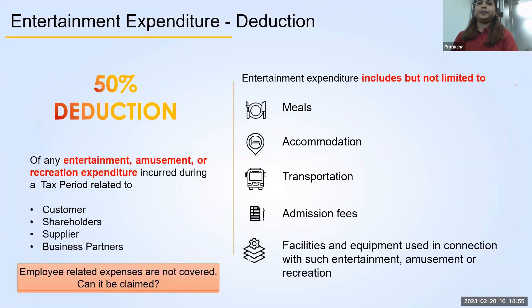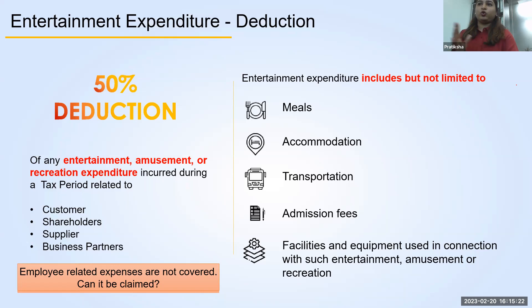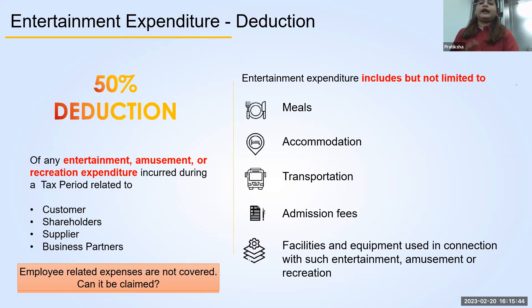There is a special provision relating to entertainment expenses. Entertainment expenses include meals, accommodation, transportation, admission fees, and similar items. This is not a limited list — other expenses that can be categorized as entertainment expenses can also fall under this provision. Such expenses are only allowed up to 50% when incurred for customers, shareholders, suppliers, and business partners. If these entertainment expenses are incurred for the employees of the company, 100% of these expenses are allowed.